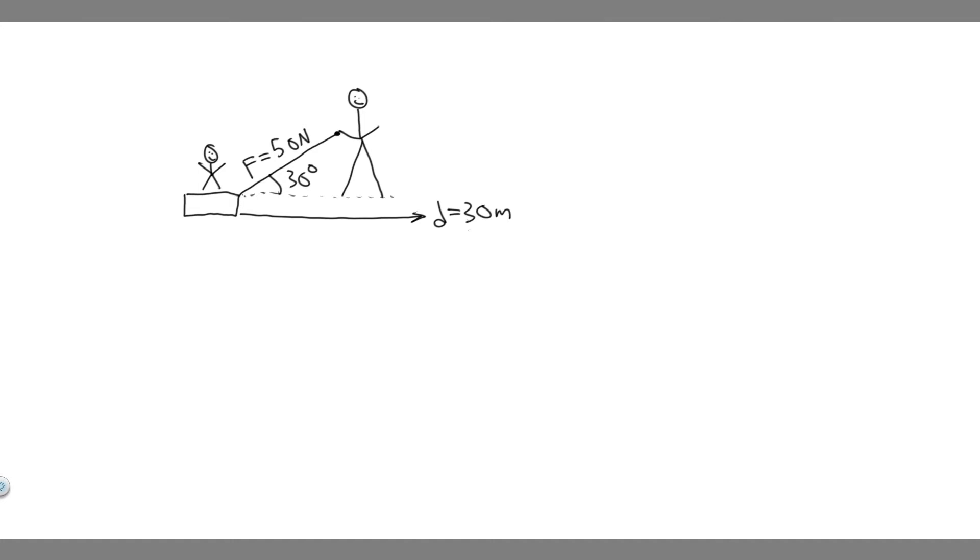What we're trying to do is find the work done by this boy, so we're going to be solving for work. The formula for work is force times distance times the cosine of theta (W = F × d × cos θ), and this is the form we're going to use to solve.